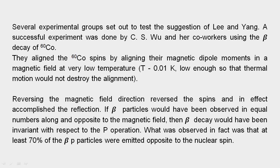They aligned the Cobalt-60 spins by aligning their magnetic moments in a magnetic field at very low temperatures — temperatures of the order of 0.01 Kelvin — low enough so that thermal motion would not destroy the alignment. Reversing the magnetic field direction reversed the spins and, in effect, accomplished the reflection.